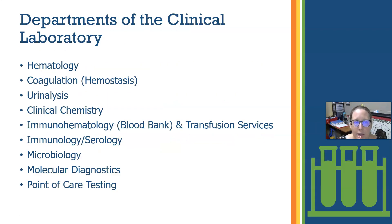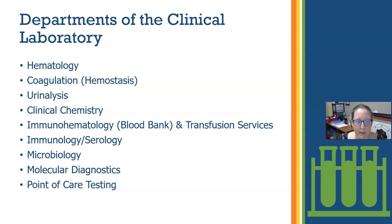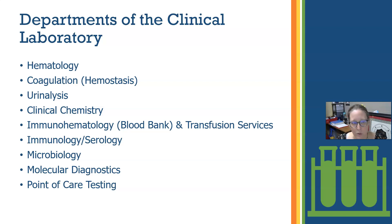The clinical laboratory is broken up into departments, often referred to as benches. The first is hematology, where we do blood counts and look at the cellular components of blood. Next is coagulation, also referred to as hemostasis, where we check clotting factors and how well blood clots. We can check how blood thinners are working for a patient, or assess coagulation status before surgery to make sure they won't bleed out.